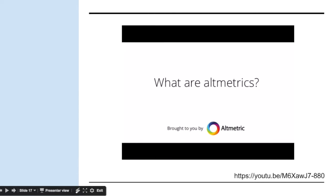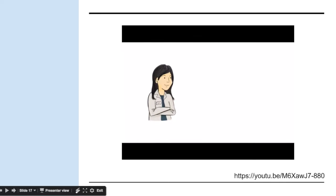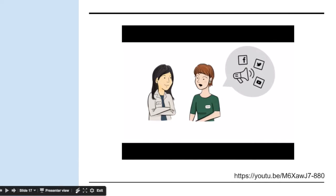In this video, we'll share a beginner's guide to alt metrics. This is Grace, a biologist who is about to go up for tenure. In her dossier, she's expected to share evidence of her community outreach efforts, but she doesn't know where to find this evidence. Grace asks her mentor, Dr. O'Reilly, for advice, and Dr. O'Reilly introduces Grace to alt metrics—a new, better way to understand all of the potential impacts of research.